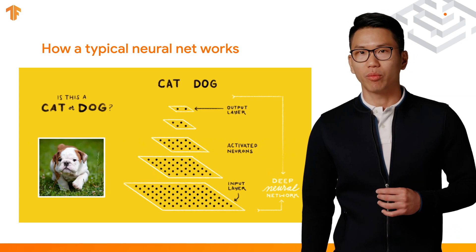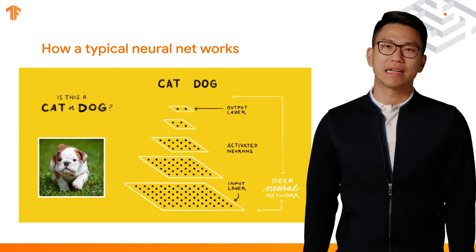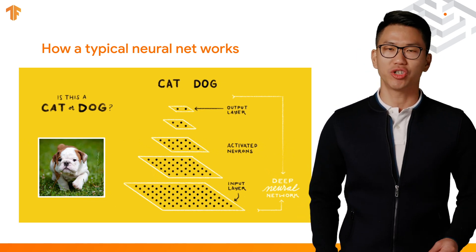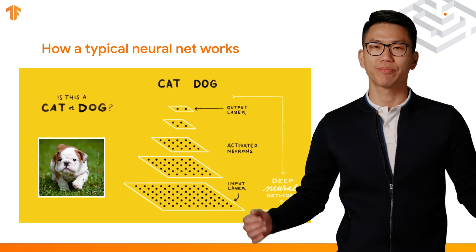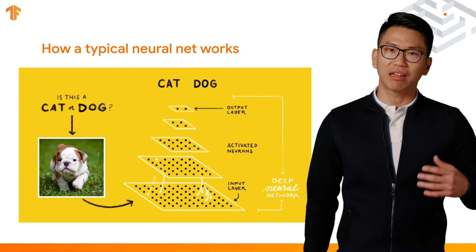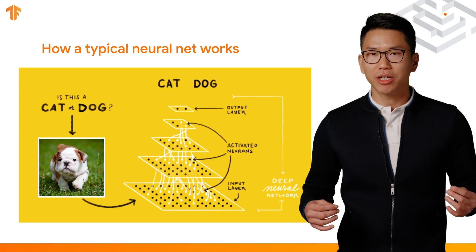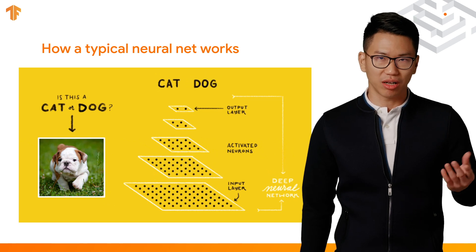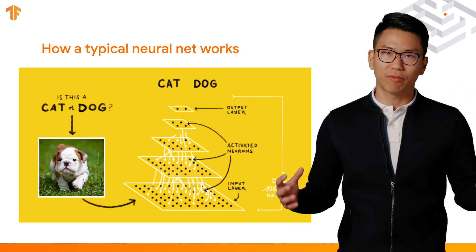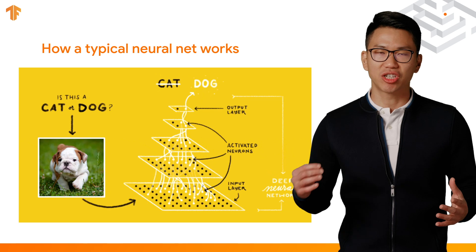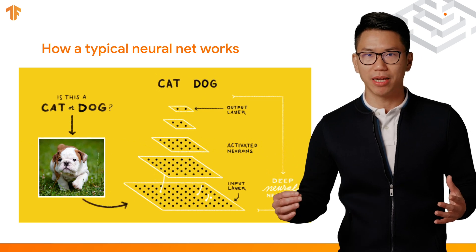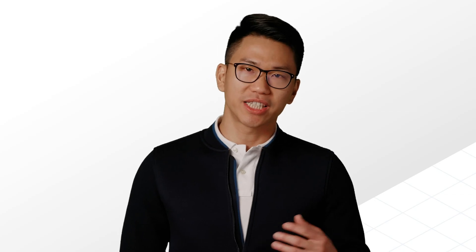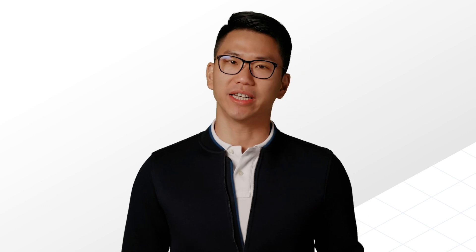So let's get started with a simple example. Consider you are creating a neural network to classify an image into a cat or a dog. Like this figure shows, the image is fed into the neural net, activating neurons layer by layer, forming several activation paths that determine this image to be classified as a cat or a dog. Seems pretty straightforward, isn't it?